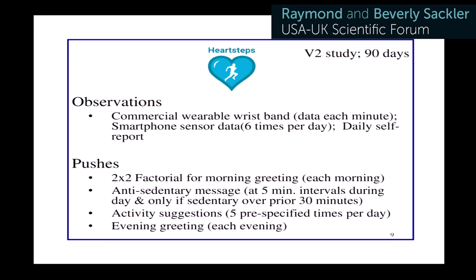Here's the second study, which will go into the field at the end of April or May. We changed the wristband because we're now also getting heart rate. We'll have a whole variety of different pushes we might provide: a morning greeting, an evening greeting from an automated coach, activity suggestions similar to the one shown earlier, and an anti-sedentary message. Notice the different timescales of these different types of pushes — daily, at five-minute intervals, five times a day, and so on.